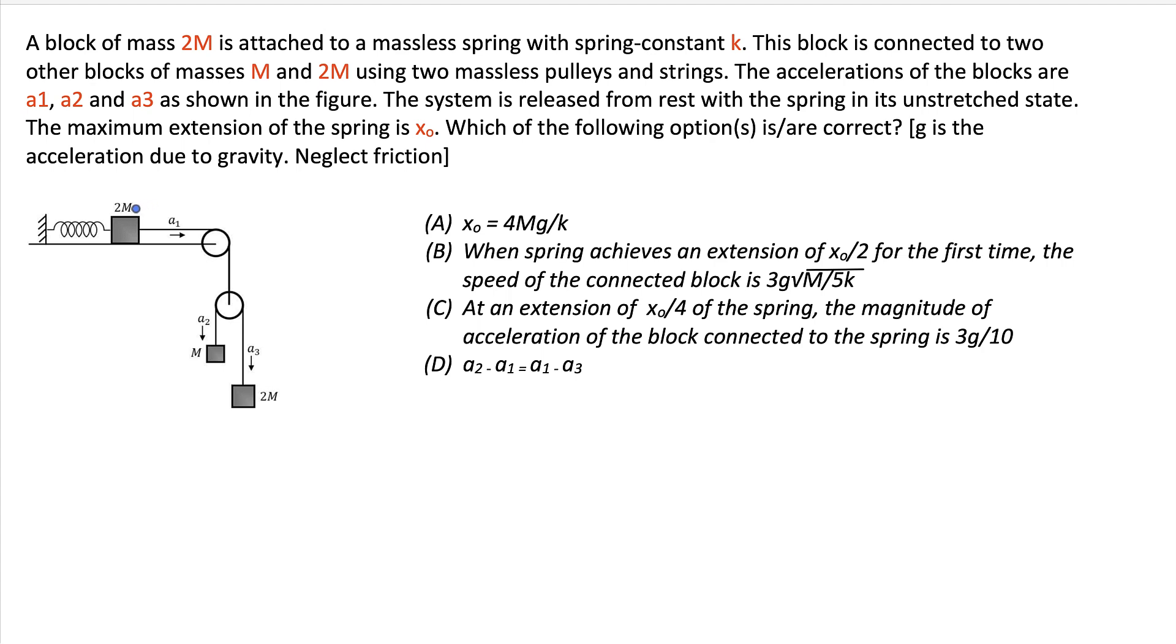There is a block of mass 2M which is attached to a massless spring with spring constant k. This block is connected to other blocks M and 2M using two massless pulleys and strings. The accelerations for the blocks are A1 for this one, A2 for this one, and A3 for this kind. When the system is released from rest with the spring in its unstretched state, the maximum extension of this spring is given as X0. And then it is asking us to find which all options are correct. In IIT JEE Advanced questions, you should check all the options and mark all the answers correctly. Then only you will get the full marks. I hope you understand the question. So let's get into the details.